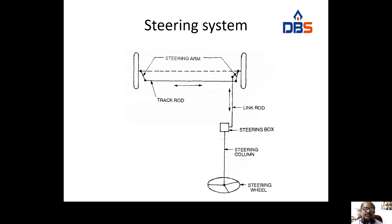This is the diagram of the steering system. There will be a steering wheel — all of you can see the steering wheel only; remaining parts are not visible. This steering wheel is connected to a steering column. Inside the steering column, there is a steering shaft also. This steering column is actually connected to a steering box — sometimes we call it a steering gearbox. There will be some gear arrangements inside.